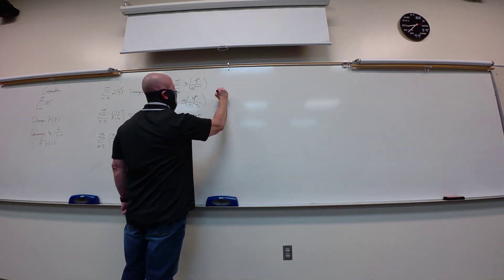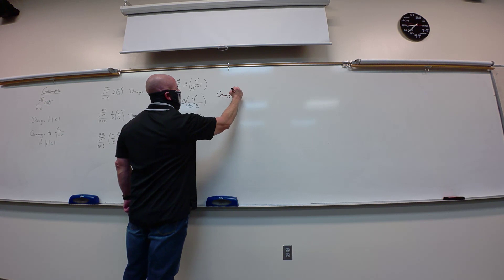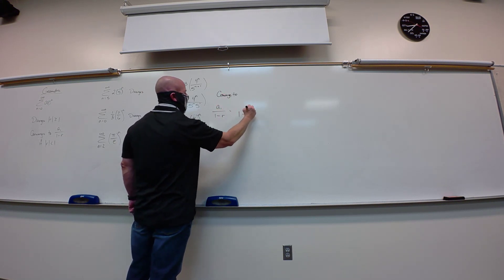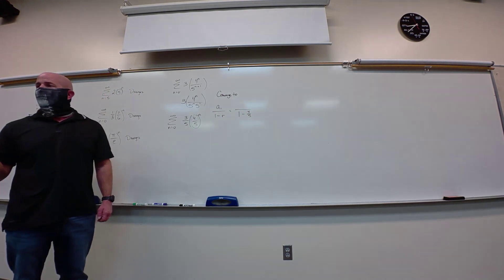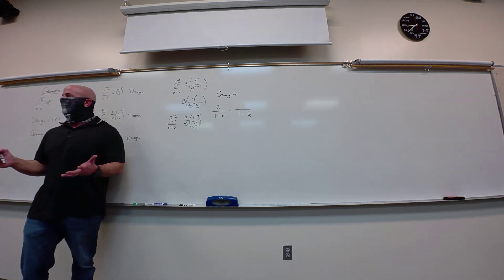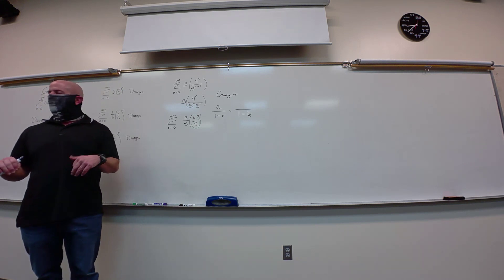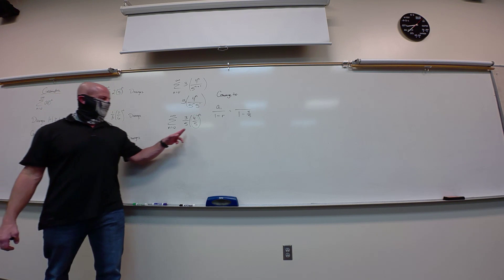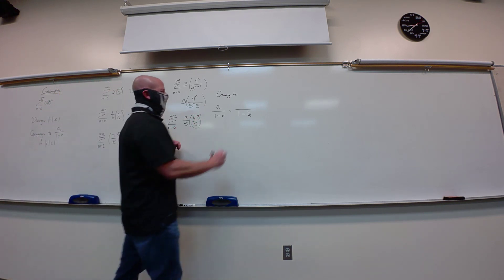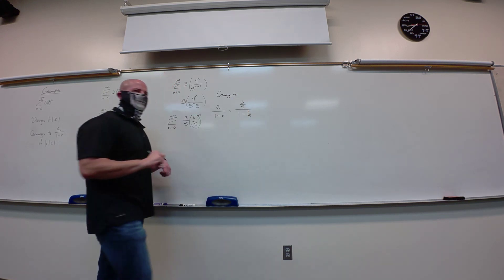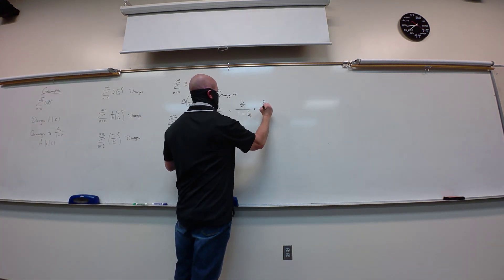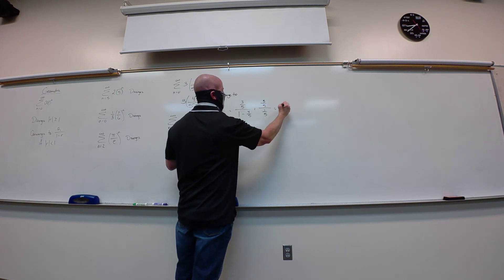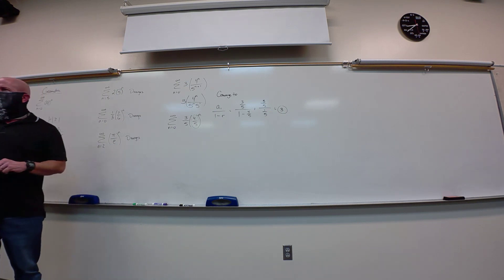Let's go, n goes from zero to infinity, three times four to the n, over five to the n plus one. A different look here. Now, what we want to make sure of is we can see what this R value is. This will be one of those that we kind of need to rewrite. I'm not worried about the three. I'm worried about the values raised to the n power. So the first thing I'm going to do is split this one off.